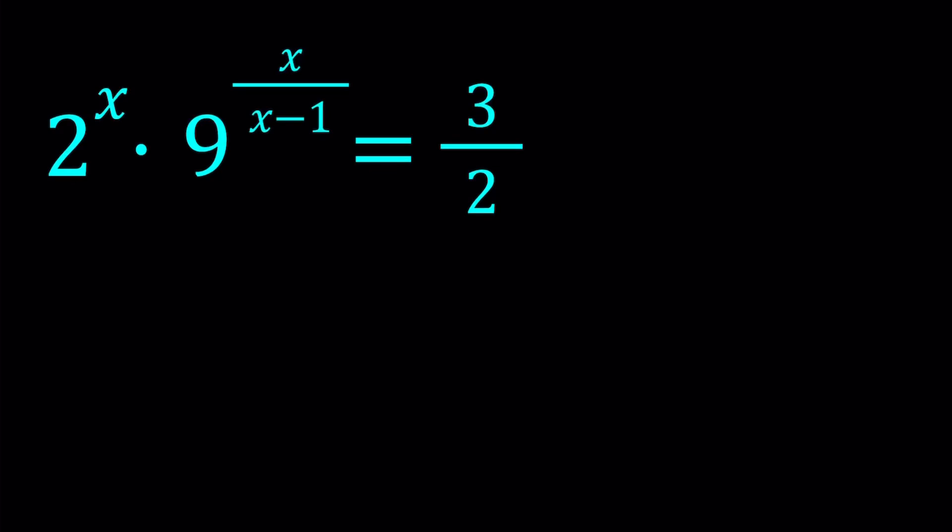Hello everyone. In this video we're going to be solving a very nice exponential equation. We have 2 to the power of x times 9 to the power of x over x minus 1 equals 3 halves.